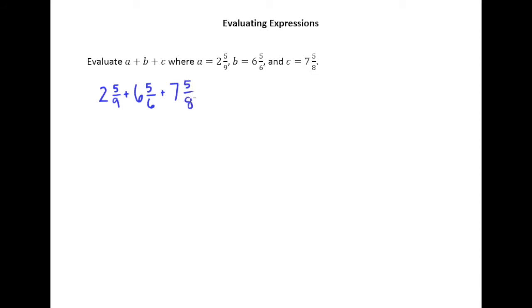So first we need to find the least common denominator. Notice that this is going to be kind of a tough one to figure out because 8 and 9 have nothing in common, but then 9 has something in common with 6, and 8 has something in common with 6. So I'm just going to go ahead and use the prime factor method here.